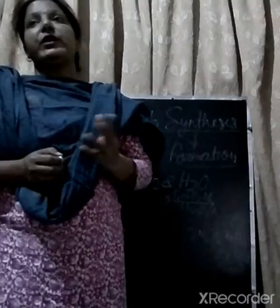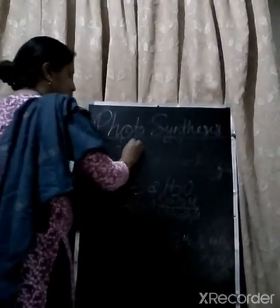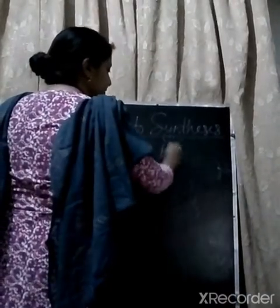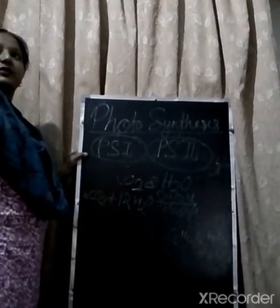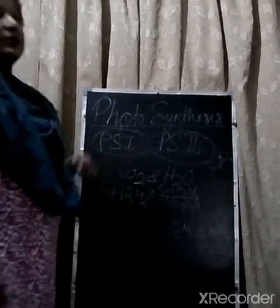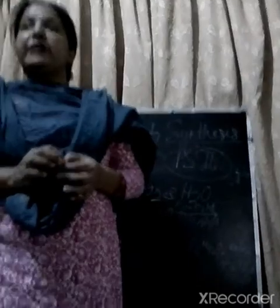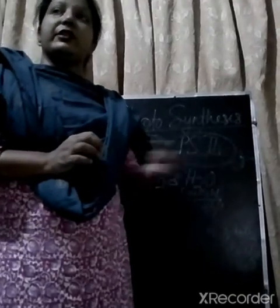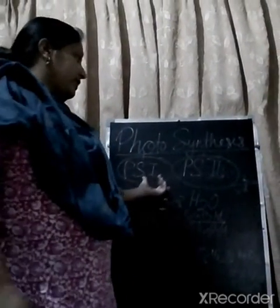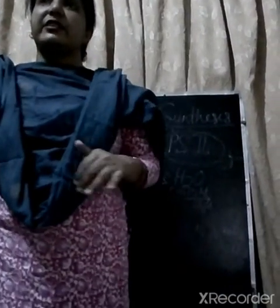There are two photosystems: Photosystem 1 (PS1) and Photosystem 2 (PS2). These two photosystems are also required for the photosynthesis process. In the daytime, within the grana present in the chlorophyll structure, these photosystems are active and light passes through them.